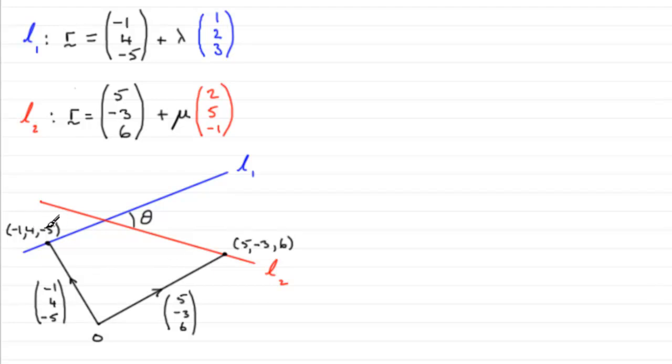We know that minus 1, 4, minus 5 is a point on the line L1 with position vector minus 1, 4, minus 5. And a similar thing happens for 5, minus 3, 6. It's a fixed point on L2 and we've got its position vector here.